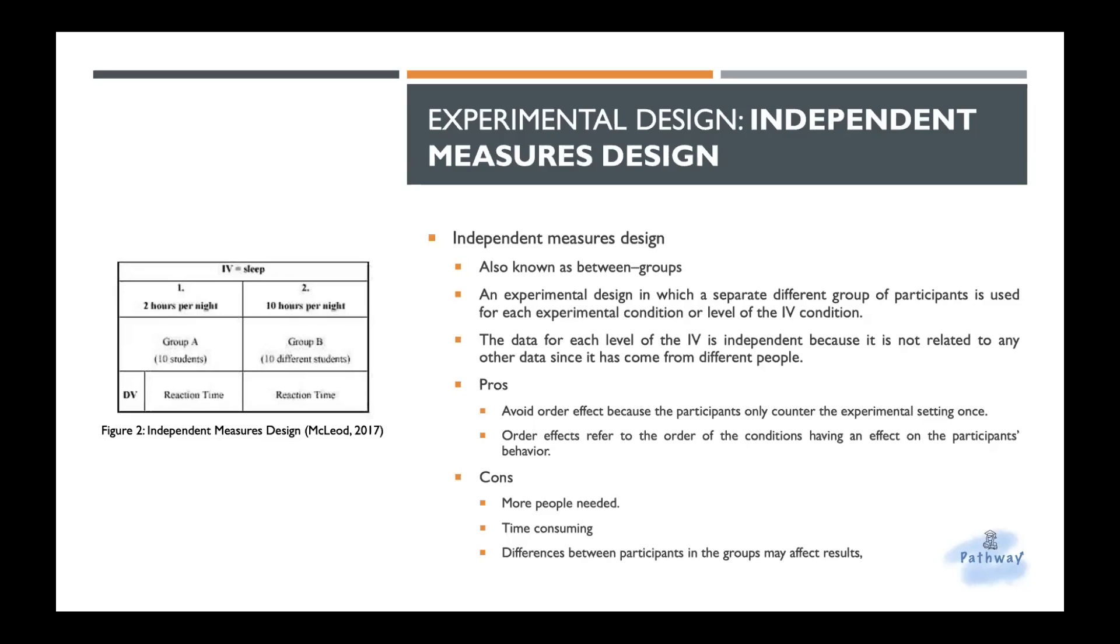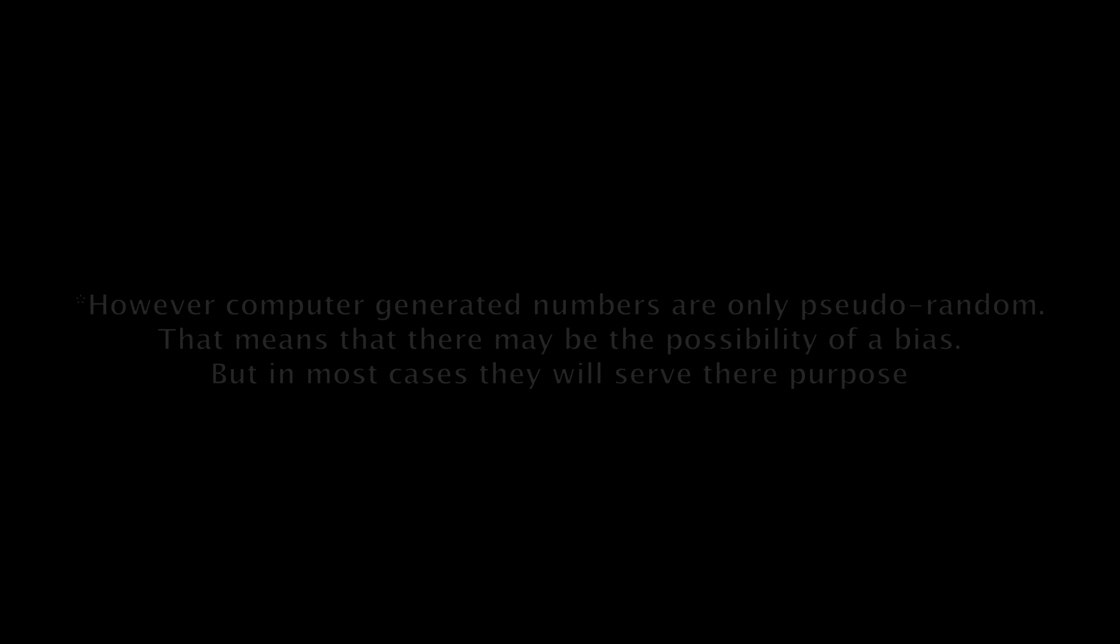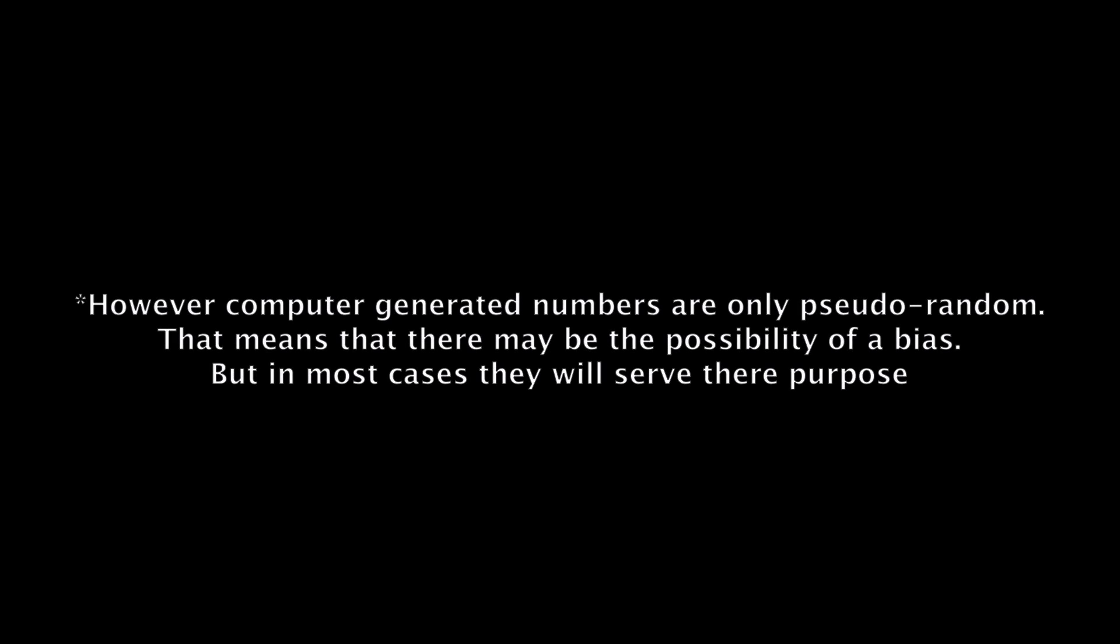So to randomly allocate participants, each person is given a number and the numbers are then randomly divided into two groups. Or if it's easier than that, you could do the lucky draw. Can be done by assigning each participant a number, putting numbers into a hat for a draw, using a random number generator on a computer if you have that much of the budget.